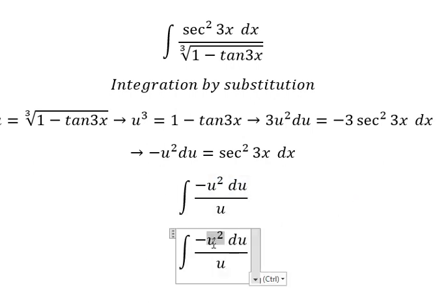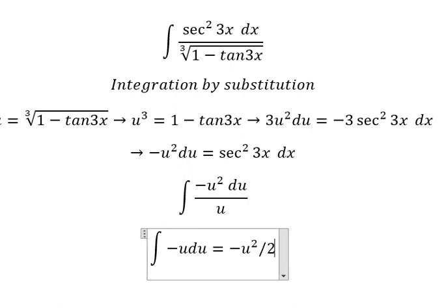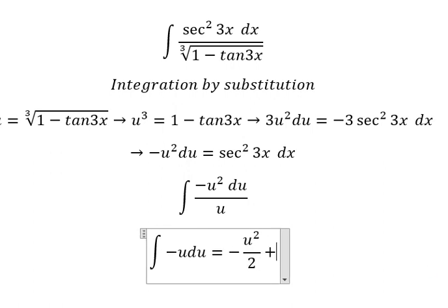So negative u squared divided by u, we have u. The integration of u, we have u squared over 2. And I will put C.